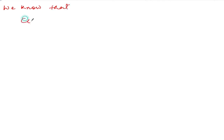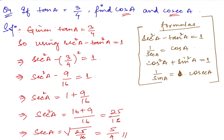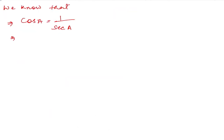We know cos(a) = 1/sec(a). Since sec(a) = 5/4, cos(a) = 1 ÷ (5/4) = 4/5. So cos(a) = 4/5.